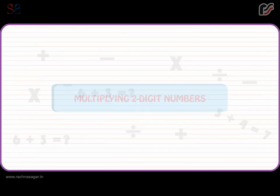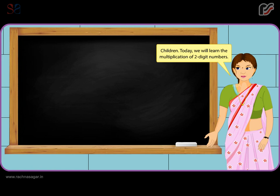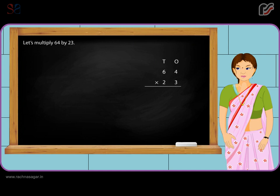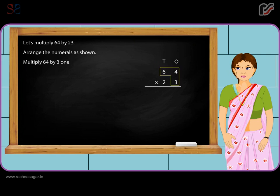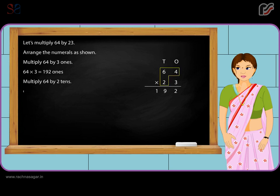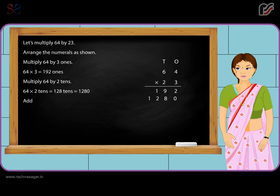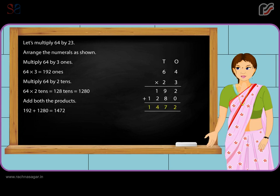Multiplying two-digit numbers. Today we will learn the multiplication of two-digit numbers. Let's multiply 64 by 23. Arrange the numerals as shown. Multiply 64 by 3 ones: 64 × 3 is equal to 192 ones. Multiply 64 by 2 tens: 64 × 2 tens is equal to 128 tens, which is equal to 1280. Add both the products: 192 plus 1280 is equal to 1472. Thus, the product is 1472.